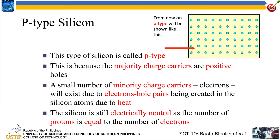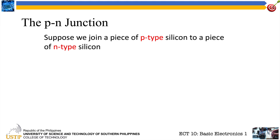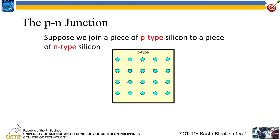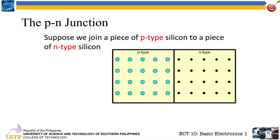That is what we call p-type silicon — p because you have positively charged particles or positive holes as your majority carriers. A p-type silicon is made up of holes. Now that we already have p-type silicon and n-type silicon, let's observe what happens if we combine these two types of silicon. That is what we call a p-n junction — joining a piece of p-type silicon to a piece of n-type silicon.